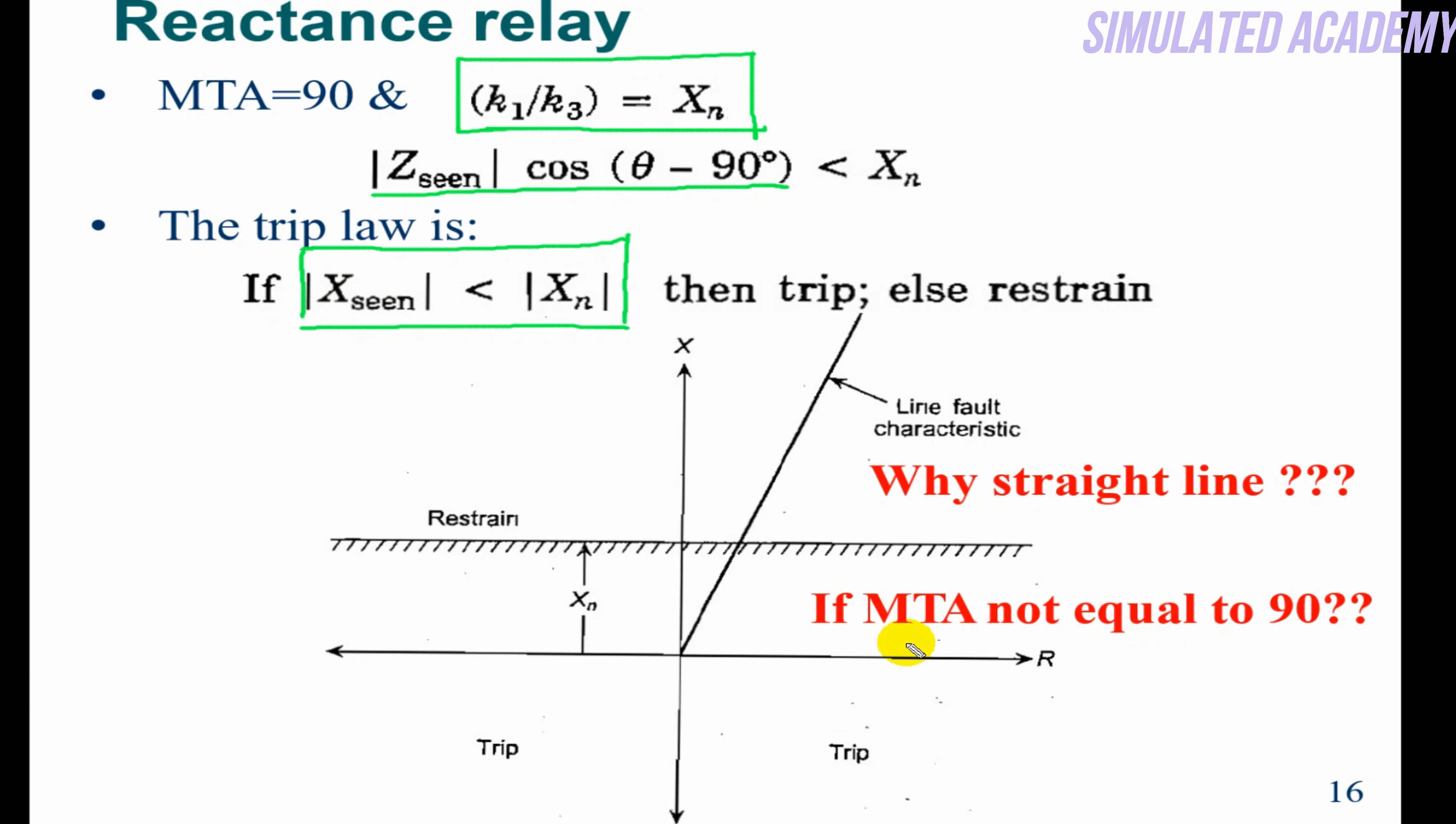So how will you plot this in an X-R graph? On the X axis we have R, and on the Y axis we have X reactance. So this is what we're getting: this straight line. Below this, if X_n value comes, it will trip; otherwise it will restrain on the upper side.